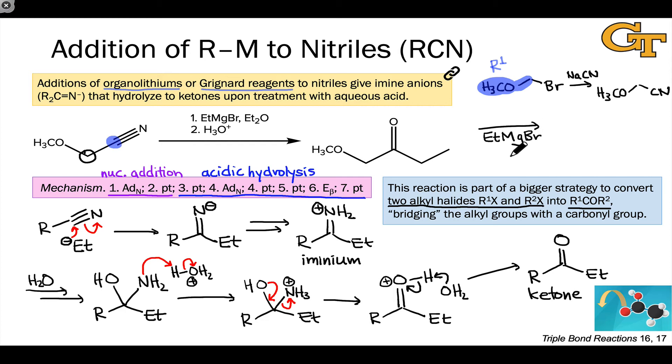We then treated with ethyl Grignard, which of course could be generated from ethyl bromide via treatment with magnesium. And here the ethyl group is serving in the role of R2 after this reaction followed by acidic hydrolysis. We end up with the ketone product in which we have R1 as one of the carbon groups linked to the carbonyl carbon and R2 as the other group linked to the carbonyl carbon. The idea here is we went from two alkyl halides, R1Br and R2Br, to a carbonyl compound bridging the two R groups.